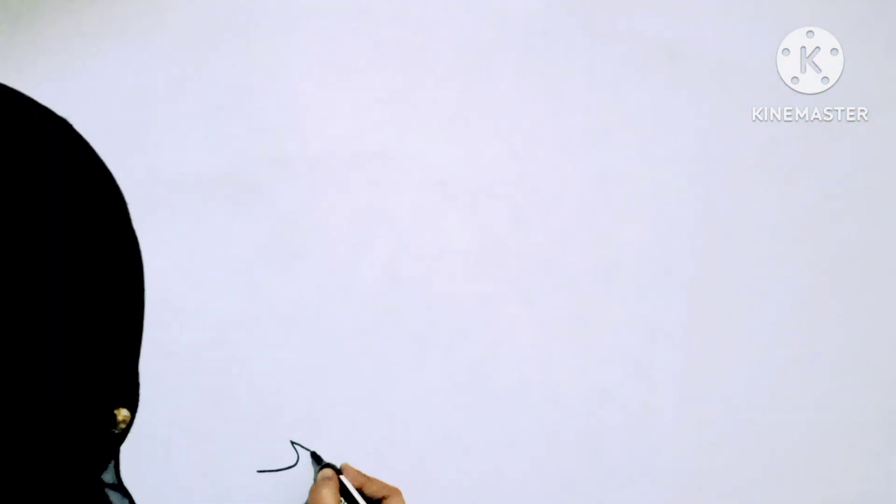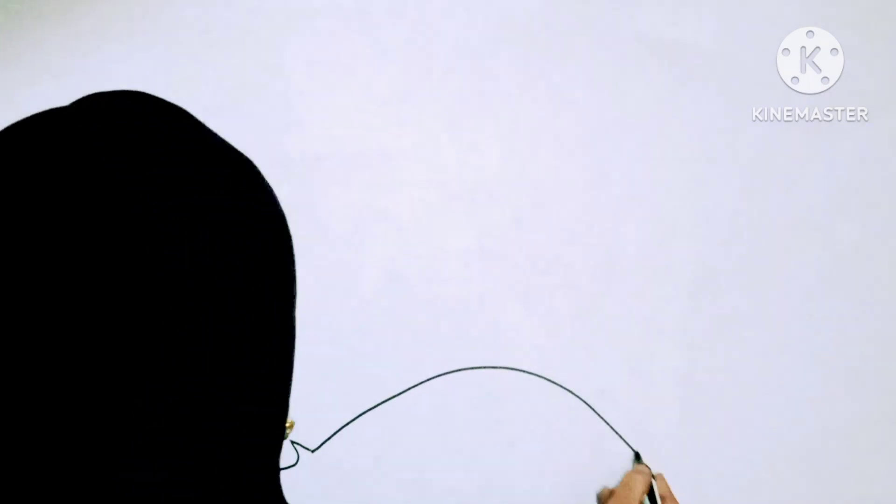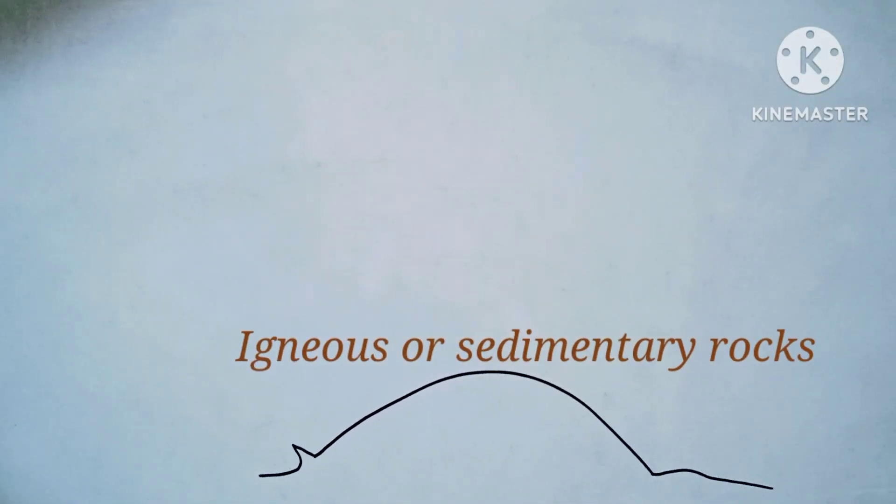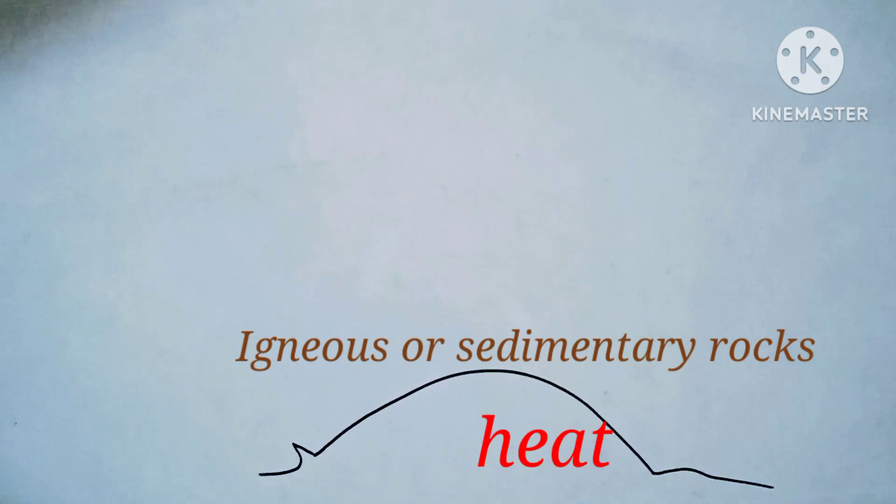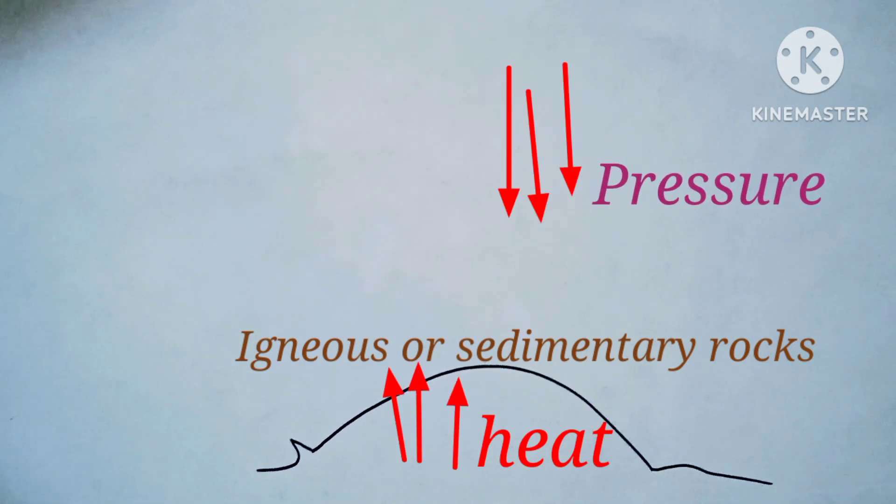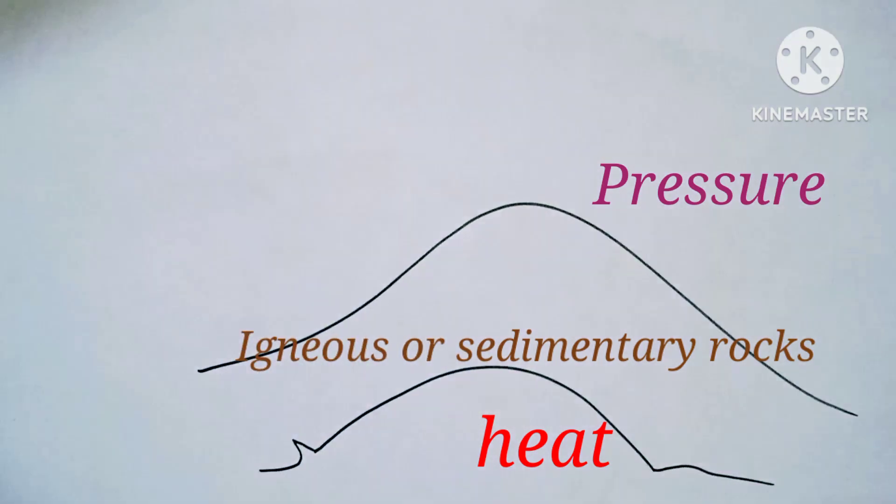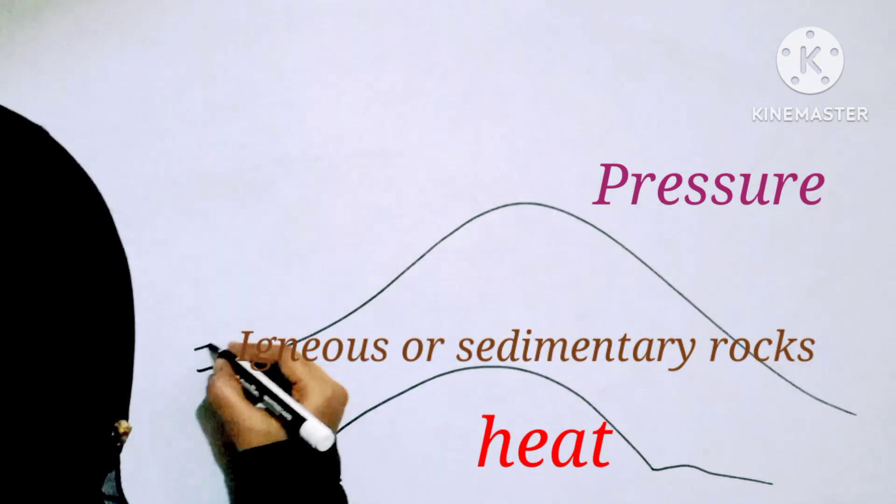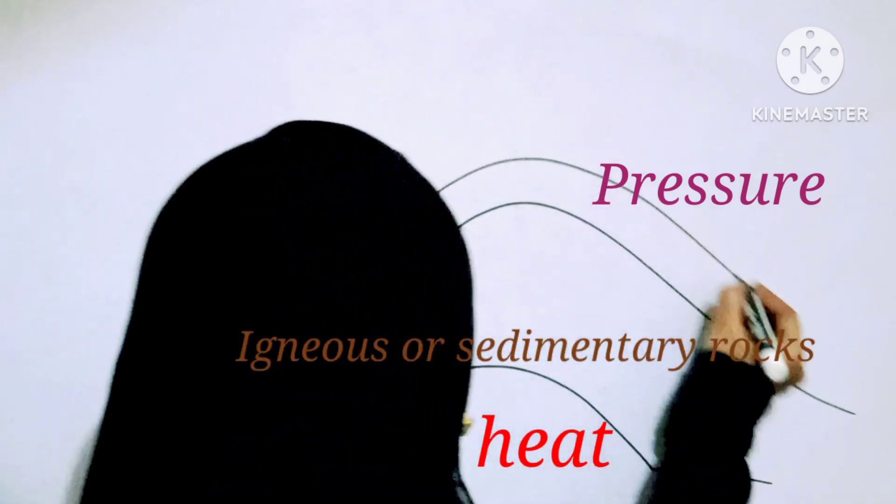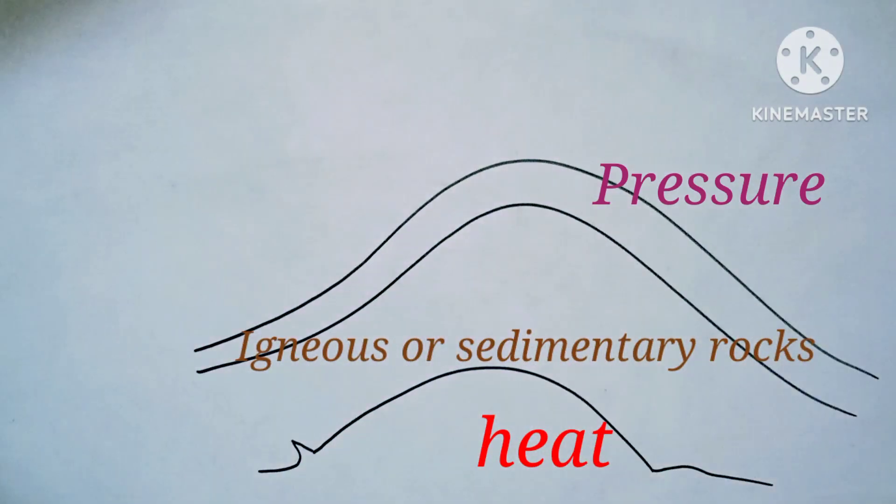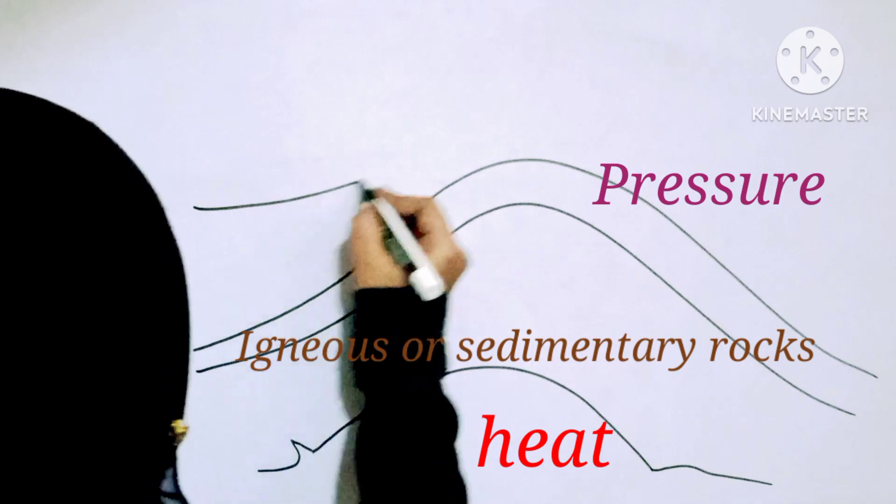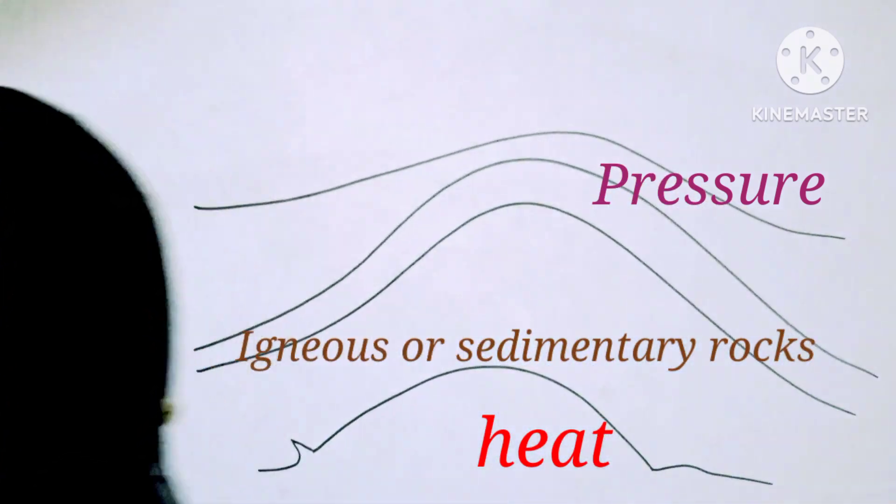Let us see the third type of rock, that is metamorphic rocks. These rocks are formed from igneous or sedimentary rocks due to extreme heat and pressure inside the earth's surface. The mineral content of some sedimentary and igneous rocks changes. The new rocks formed are called metamorphic rocks. The word metamorphic comes from the word metamorphosis, which means change.